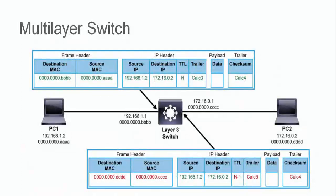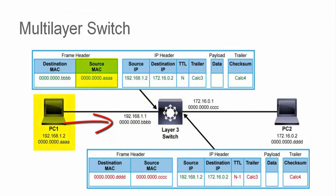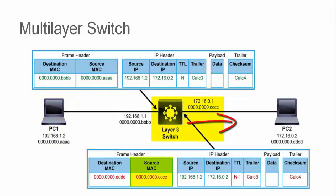The MAC source and destination addresses will be updated by the switch as traffic passes through it. The incoming frame will have the destination address that belongs to the layer 3 switch, and the source address will be that of the device that sent the frame. As the frame leaves the switch, the header will be rewritten — the source address will now be the layer 3 switch and the destination will be the address of the next device, as determined by the TCAM and CAM table lookups.